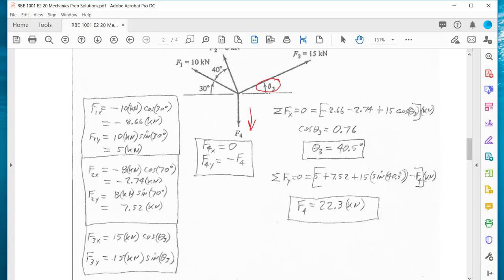By setting up our equations, we look at this equation - the only unknown in this equation is theta3. So we can solve that equation for theta3. And then if we set up this equation, now that we know theta3, the only unknown left is F4. So now we can solve for F sub 4.